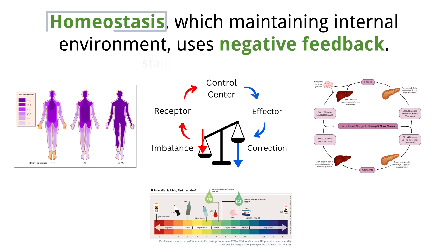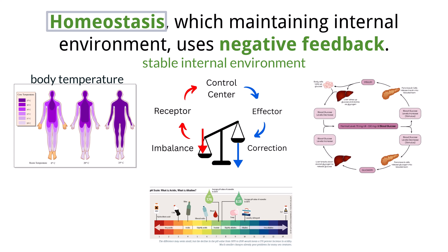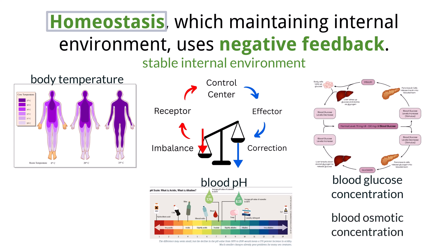Homeostasis is the maintenance of a stable internal environment, keeping variables within narrow limits despite external changes. In humans, key homeostatic variables include body temperature, which is maintained around 37 degrees Celsius, blood pH, kept at about 7.4, blood glucose concentration, about 4 to 6 millimoles per liter, and blood osmotic concentration, linked to solute levels in sodium.